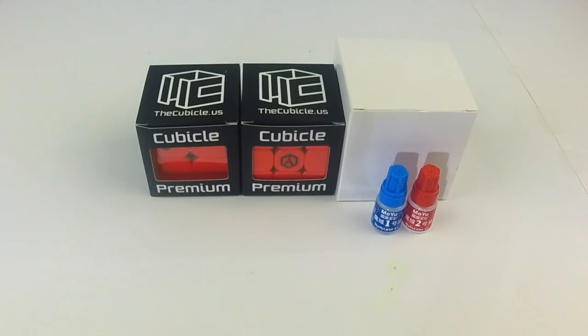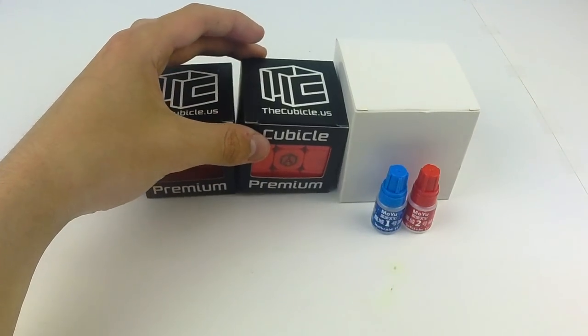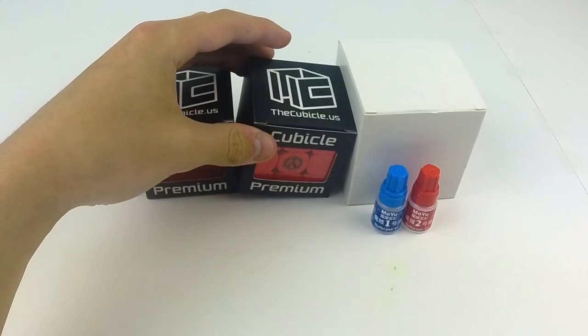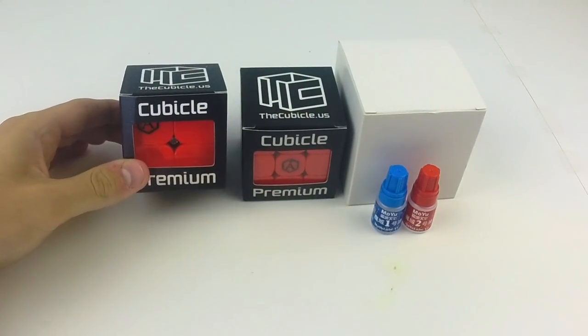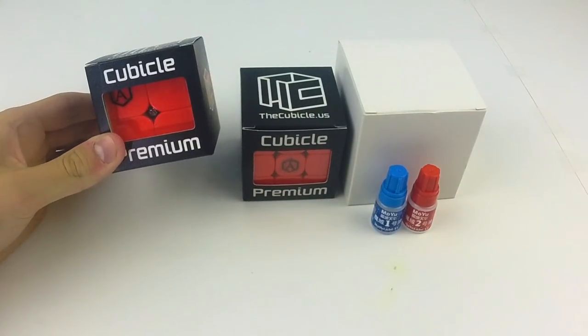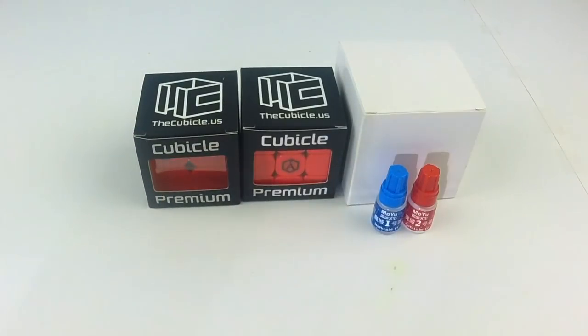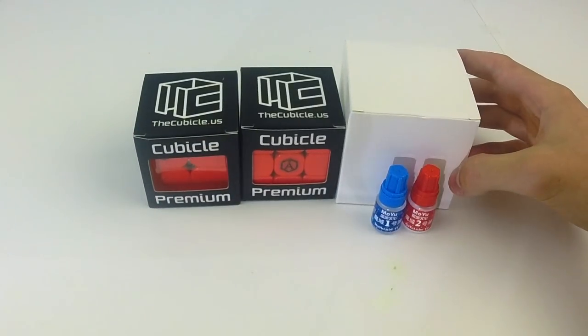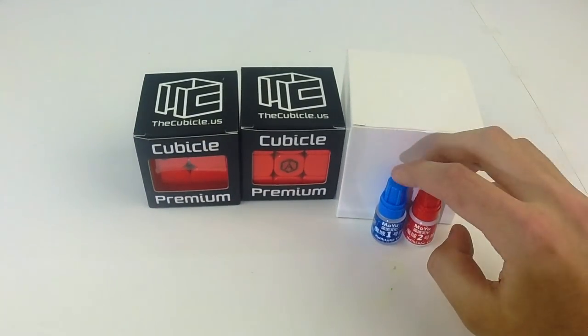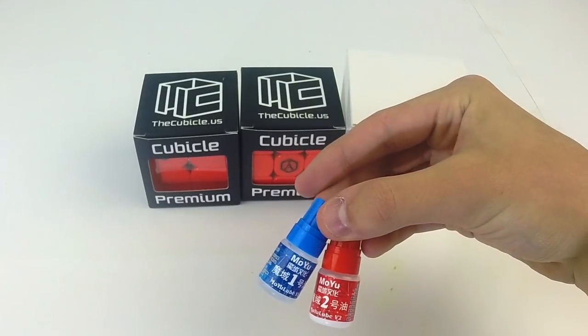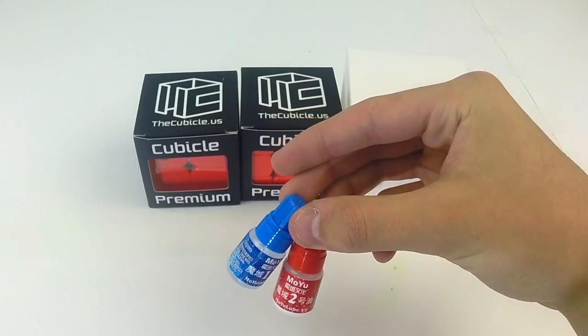So I knew that they were going to send me a polymer coated GTS-2M, which is what I think this is, but they also sent me this 2x2, which is clearly Angstrom, but I'm not sure what kind of 2x2 it is. I have no clue what's in this box. And they also sent me this Moyu lube, which I've never heard of, but I'm curious to try that in a little bit.